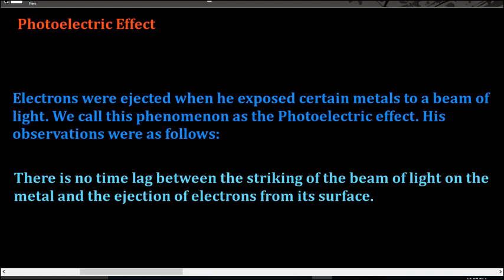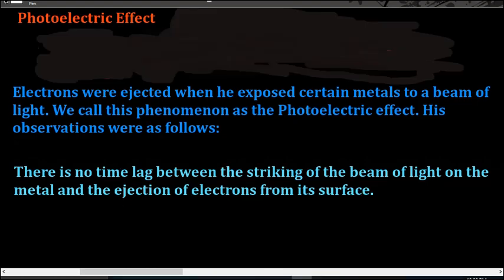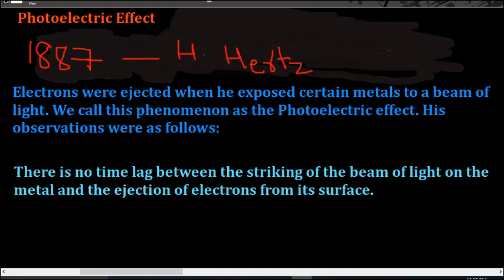Now let us study the second phenomenon of the particle nature of electromagnetic radiation — that is, the photoelectric effect. In the year 1887, a scientist named H. Hertz performed an experiment in which electrons were ejected when he exposed certain metals to a beam of light. He called this phenomenon the photoelectric effect. He observed that there was no time lag between the striking of the beam of light on the metal and the ejection of the electrons from the surface.